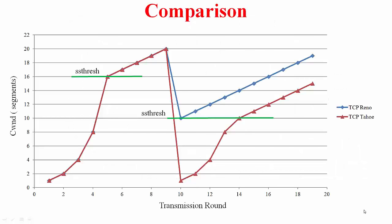Here is a quick comparison with TCP Tahoe. Until the loss point everything is the same. After detecting a loss, in TCP Reno you cut the window but avoid slow start and just do congestion avoidance, whereas in TCP Tahoe you cut the window to 1 and do slow start up to ssthresh before doing congestion avoidance. TCP Reno does better than TCP Tahoe.